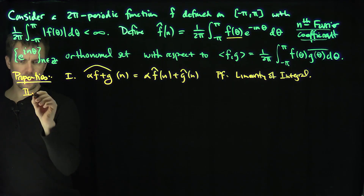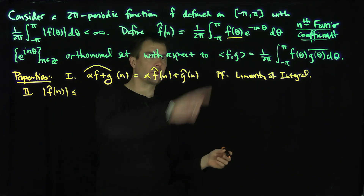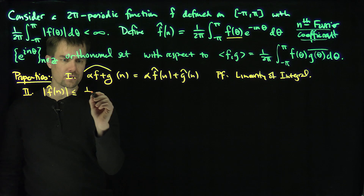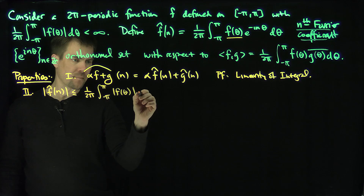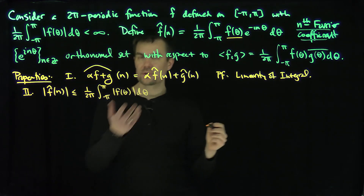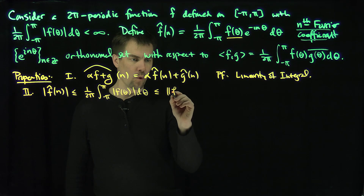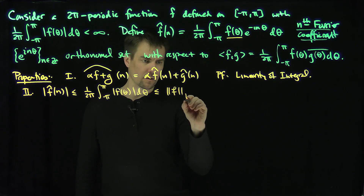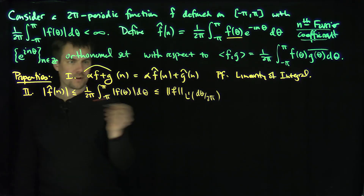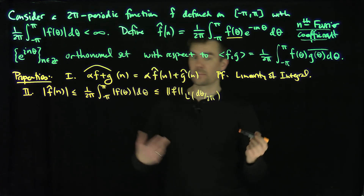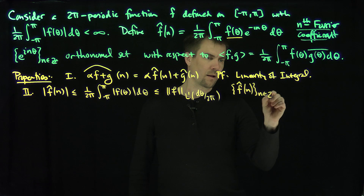The second trivial property is a bound: the absolute largest these Fourier coefficients can be is 1 over 2π times the integral from negative π to π of |f(θ)| dθ. This is the L1 norm of the function, which we know is finite. So the L1 norm of the function controls the size of the Fourier coefficients — the sequence f̂(n) for n in ℤ is bounded. This follows from the triangle inequality.